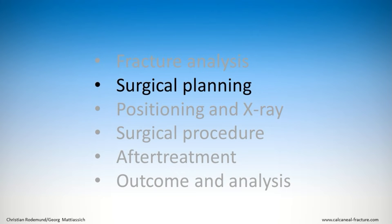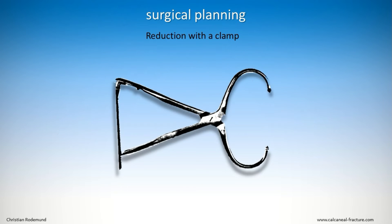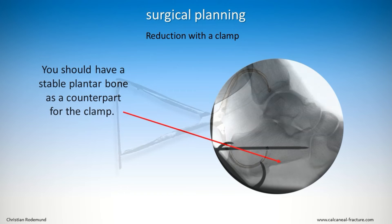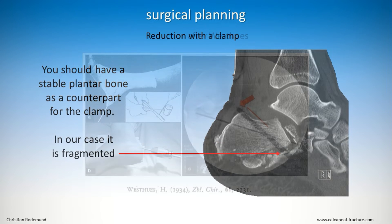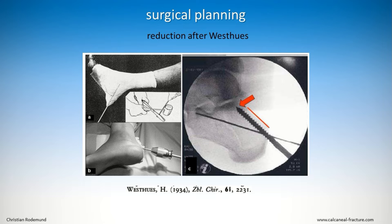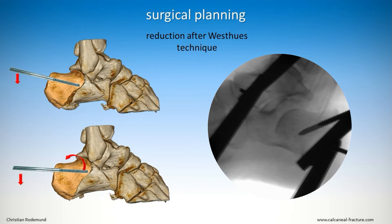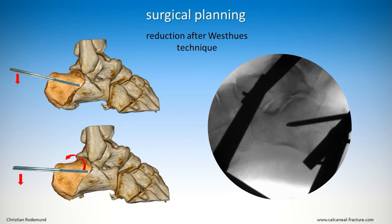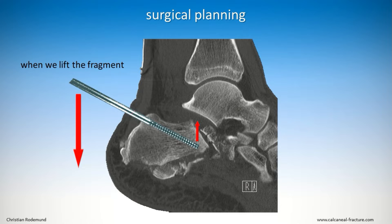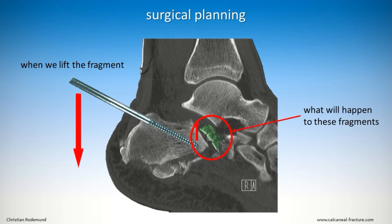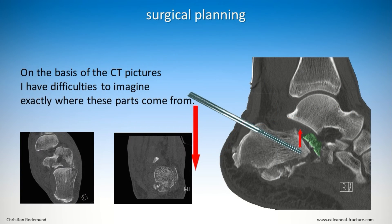For this type of fracture two reduction techniques are typically used: one with a clamp, the other performing the Westhues method. For the clamp we need a stable plantar bone structure as a counterpart. In this case it is fragmented, so we prefer the Westhues procedure. The principle is to position, for example, a Schanz screw deep into the fragment from dorsal and then lift it. But as we simulated this procedure we saw a problem: the small central parts.